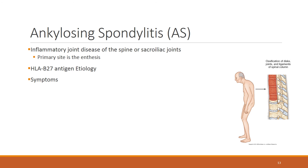Ankylosing spondylitis is an inflammatory joint disease that causes stiffening and fusion of the joints. It has a systemic and autoimmune character. Inflammation in the spine or sacroiliac joints causes stiffening and fusion. The primary sites are where ligaments, tendons, and joint capsules insert into the bone — called entheses — so the enthesis is considered the primary site of this disease.